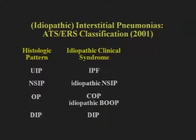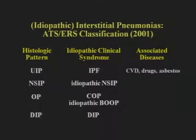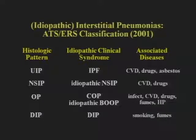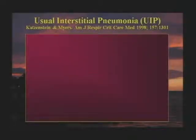What this classification did not emphasize, but I'll emphasize now, is that each of these histologic patterns may be associated with various diseases. UIP may result from collagen diseases, drugs, or asbestosis. NSIP is very commonly associated with collagen diseases and may be a drug reaction. Organizing pneumonia has many causes: post-infectious, collagen diseases, drug reactions, fume inhalation, hypersensitivity pneumonitis. In the vast majority of patients, DIP is associated with cigarette smoking. So these patterns may be idiopathic or associated with disease.